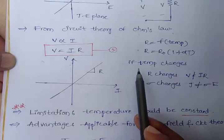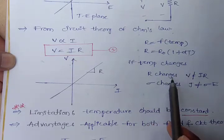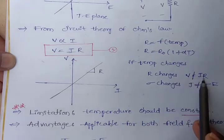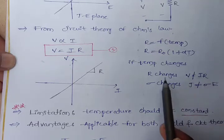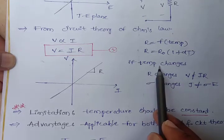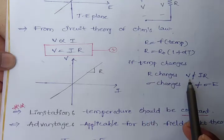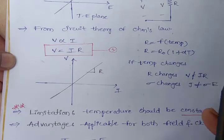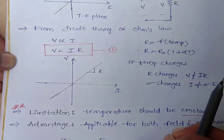If temperature changes, R is also changing — that means it will violate Ohm's law. It will violate Ohm's law if R changes, and R changes when temperature changes. Therefore, temperature must and should be constant for Ohm's law to hold.